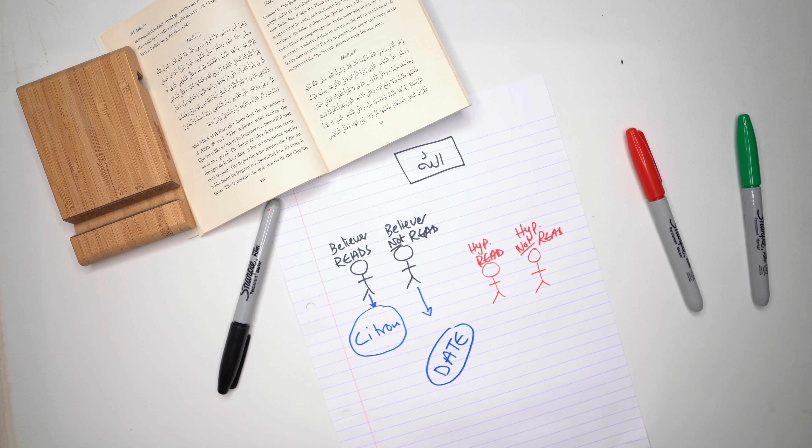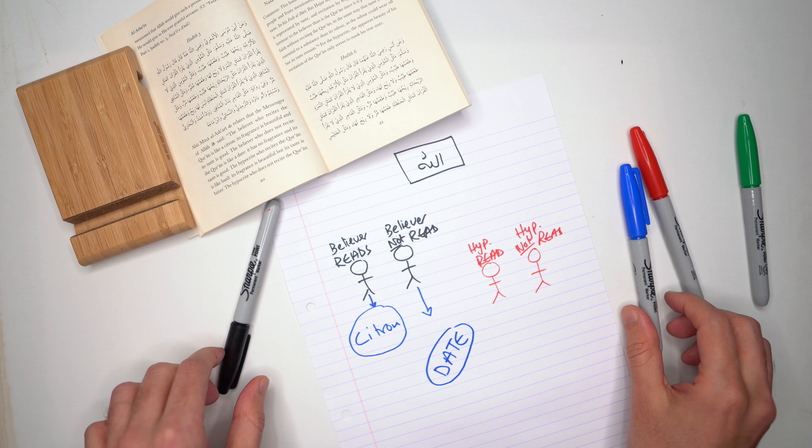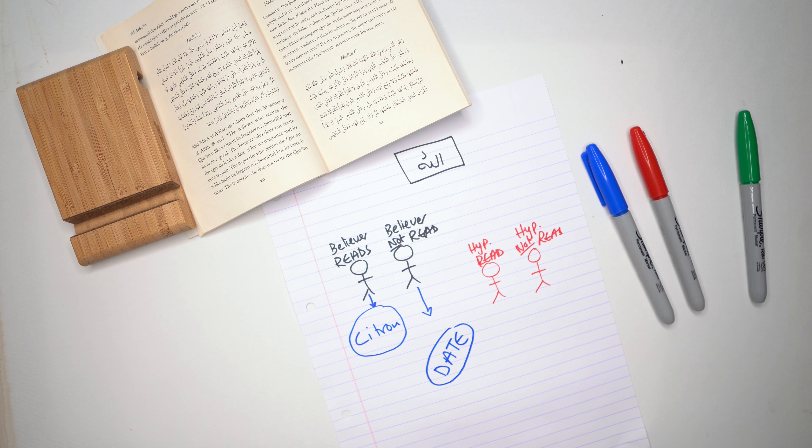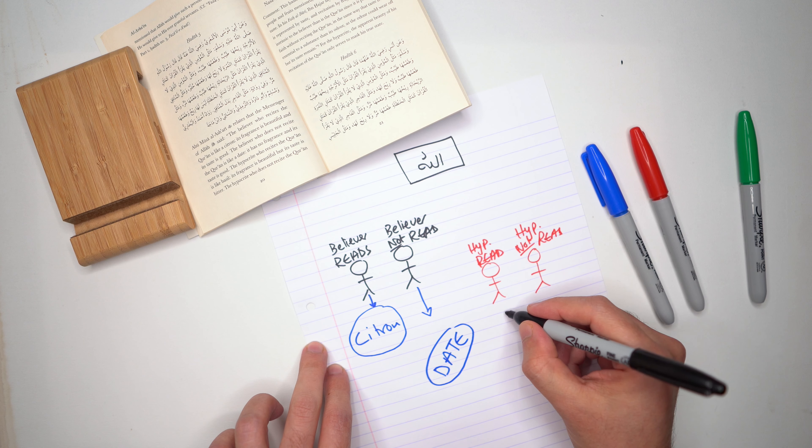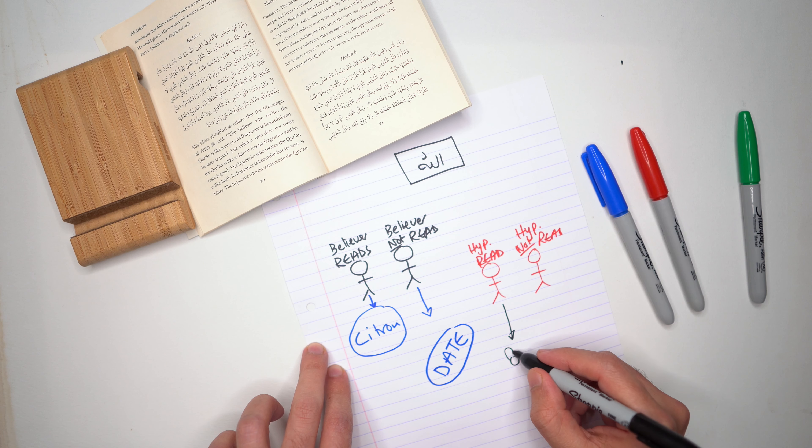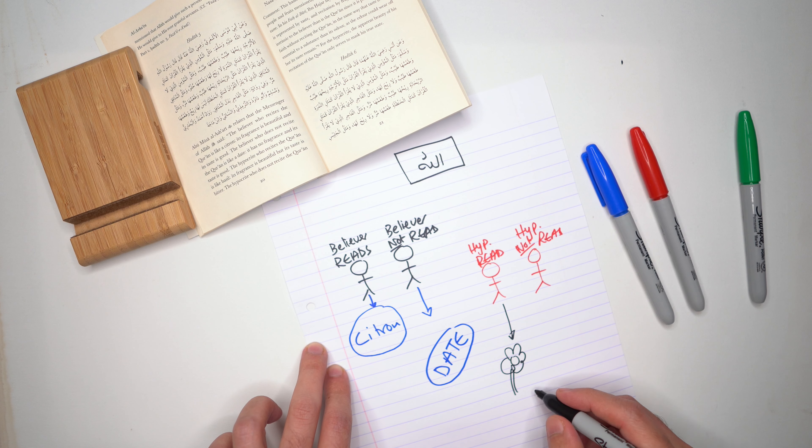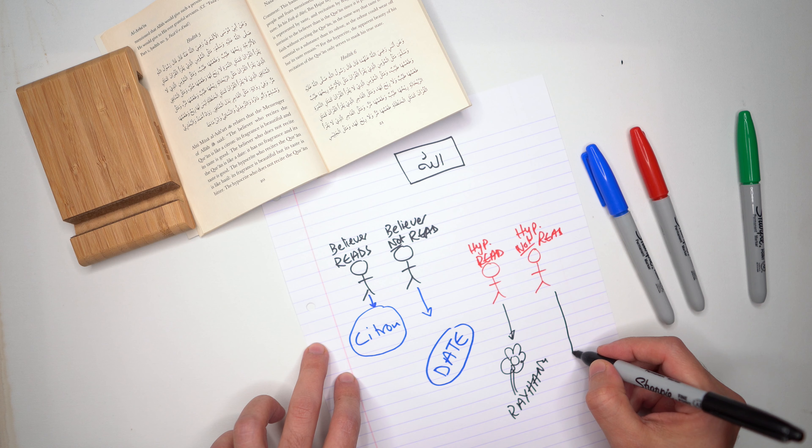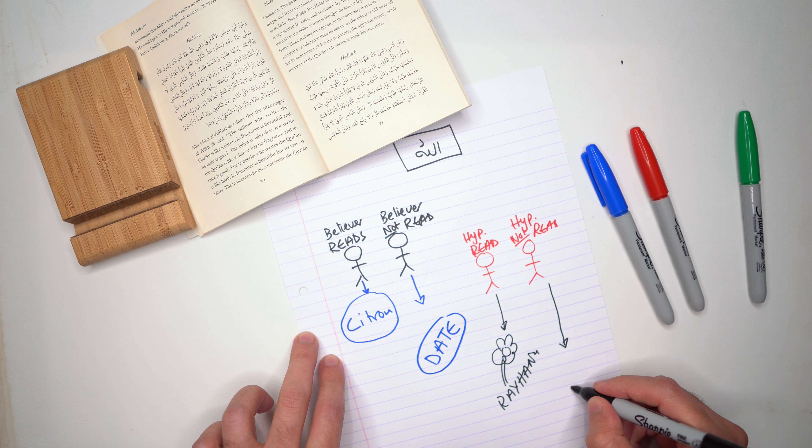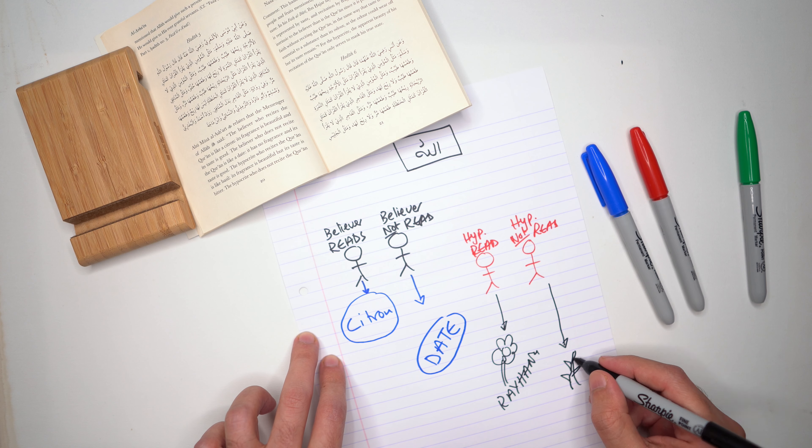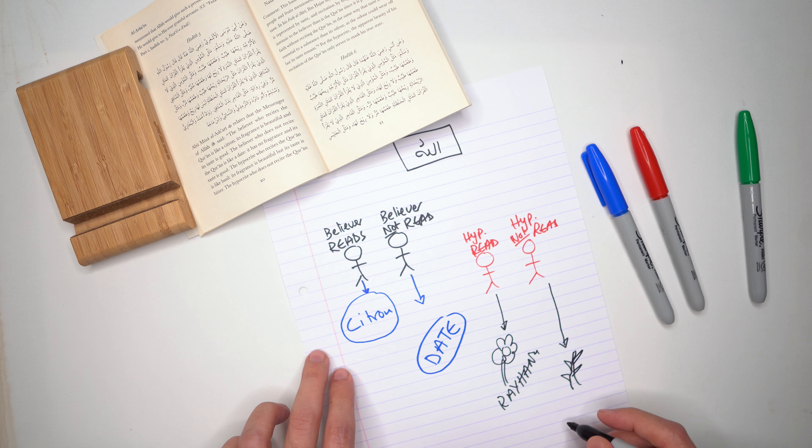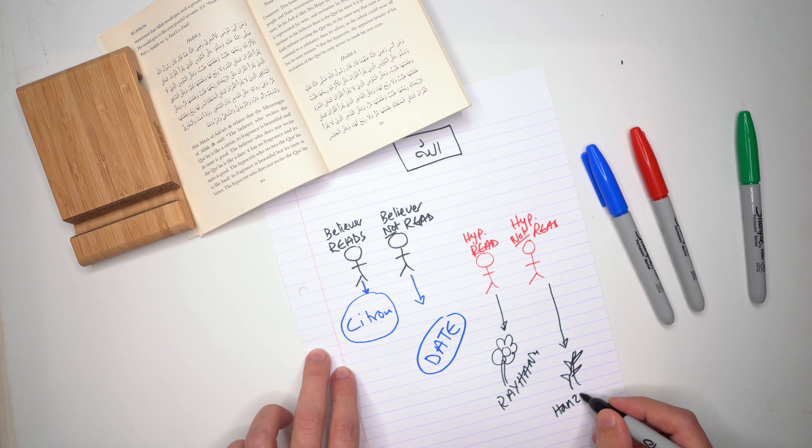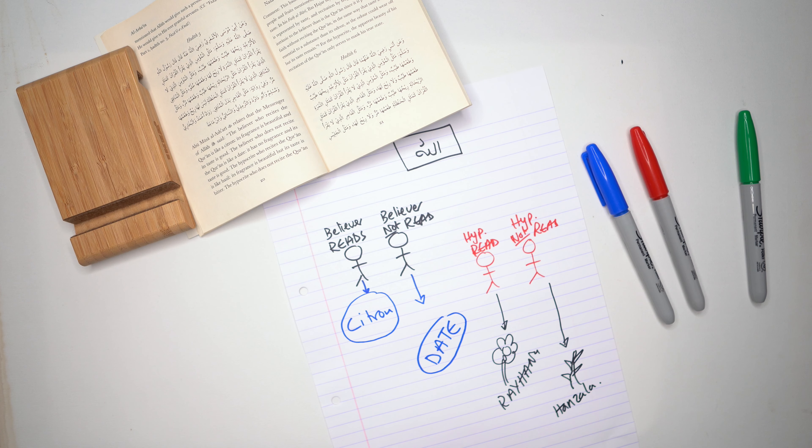The example of a hypocrite who reads the Qur'an is like the example of a rayhana flower. And the example of a hypocrite that does not read the Qur'an is like a hanzala - it has thorns on there, the hanzala flower plant.